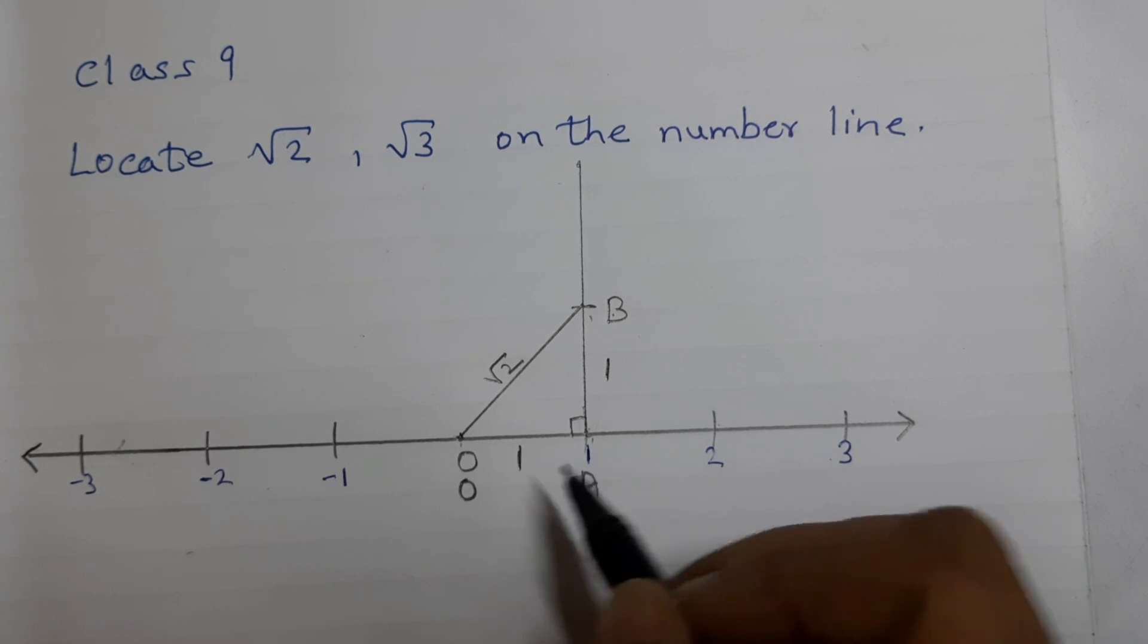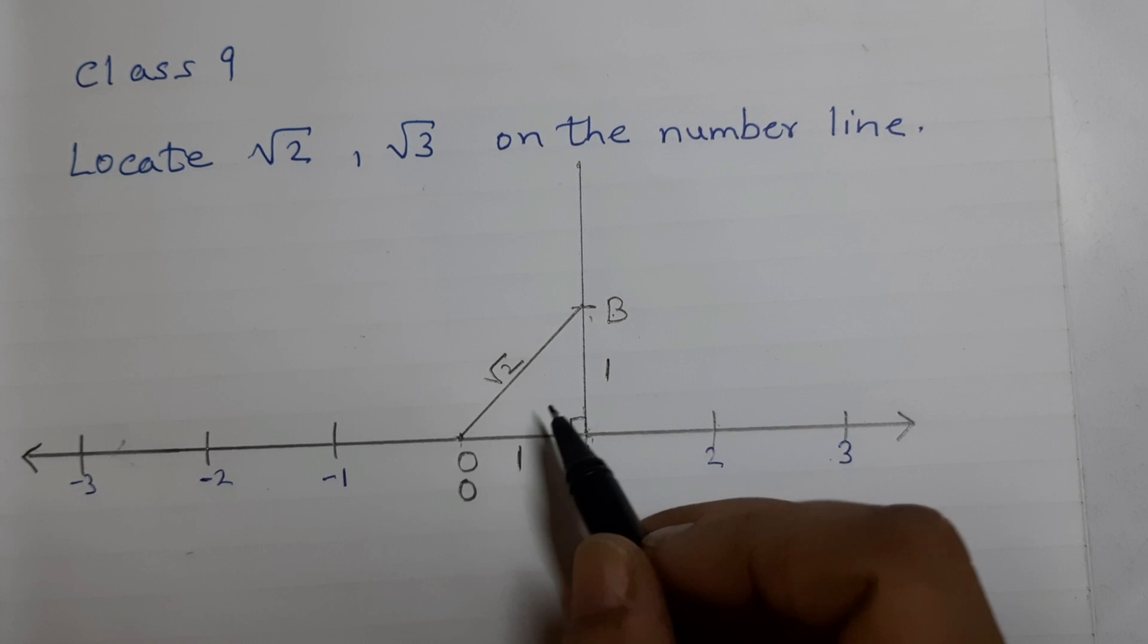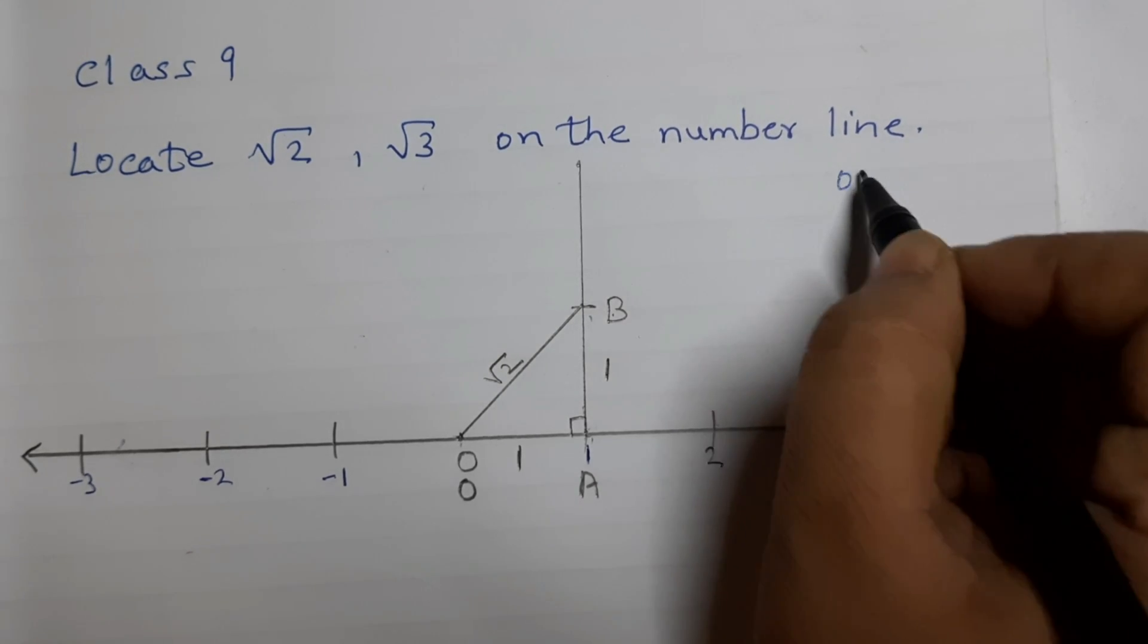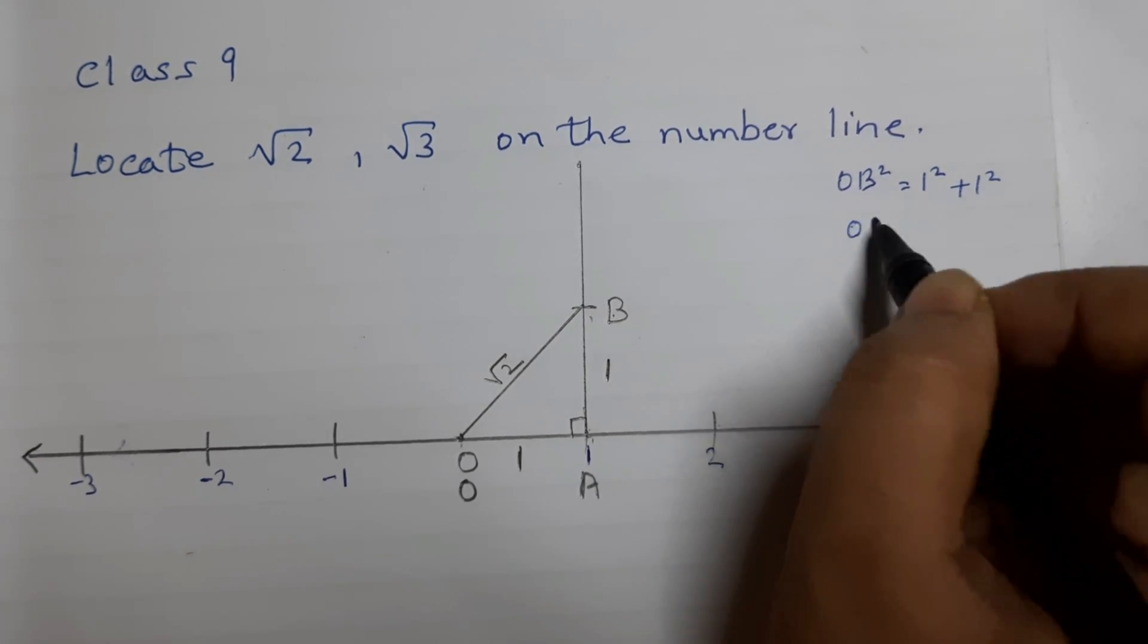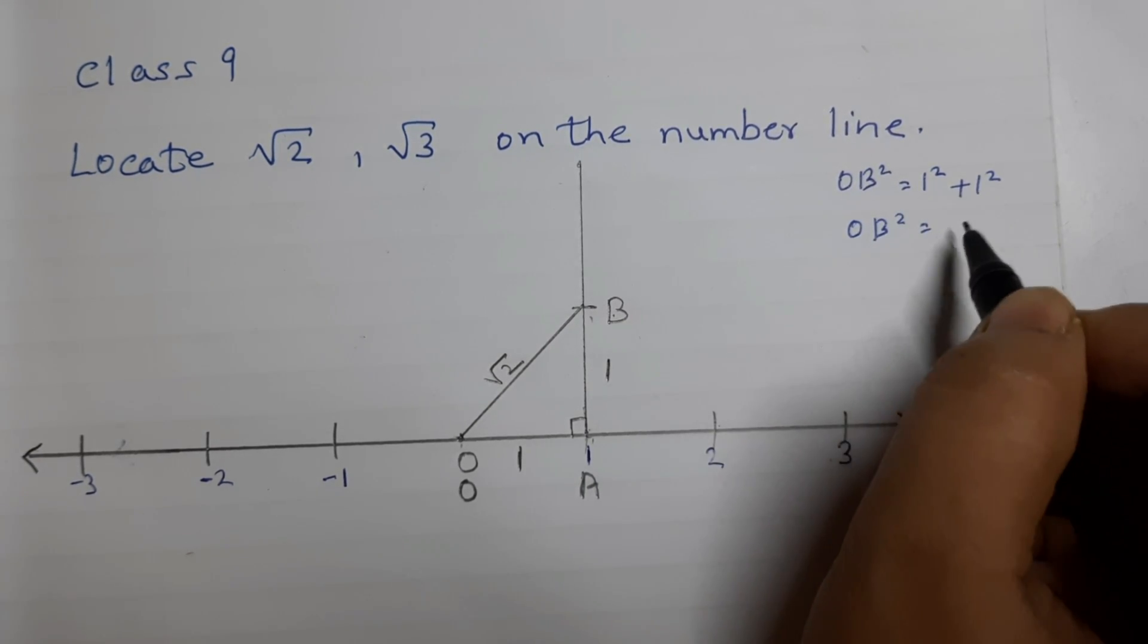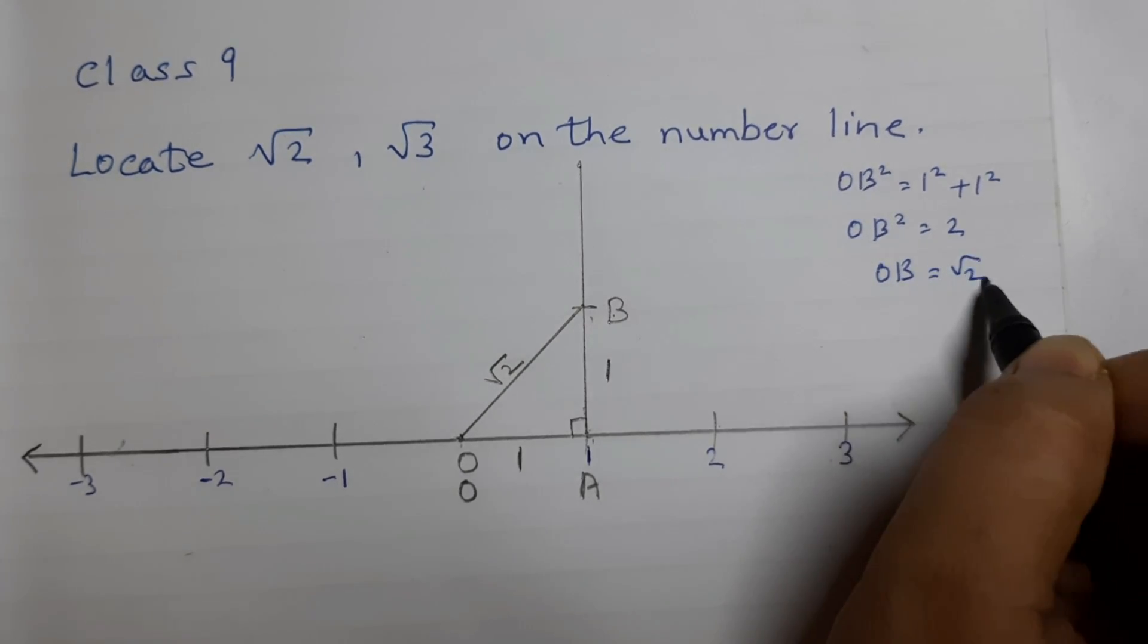According to Pythagoras theorem, 1 squared plus 1 squared is equal to OB squared. So, OB squared is equal to 1 squared plus 1 squared, which equals to 1 plus 1, 2. So, OB is square root of 2.